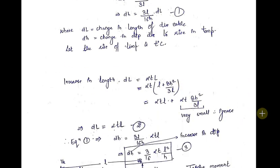Now if you see this equation, we can ignore the second term because it is very small. Therefore, dL can be written approximately equal to alpha·T·small l. Let us take this as equation number 2.